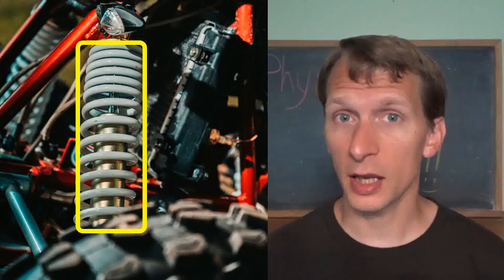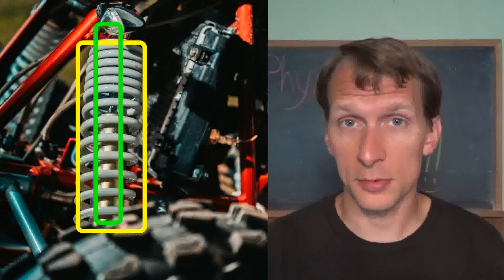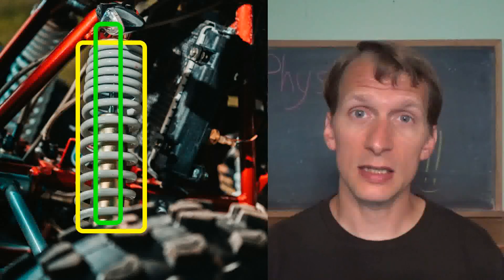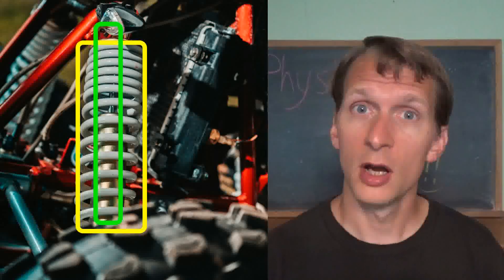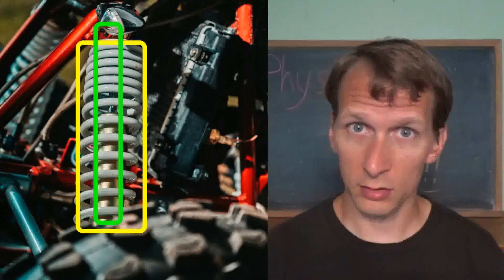Shock absorbers in a vehicle are part of the suspension, and at minimum they consist of a coil spring and the actual shock absorber itself. They're connecting the main body of the car, the main frame, to the axle where the wheels are attached.